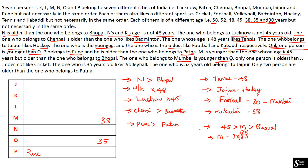Now, M is 38 years and must be older than the Bhopal person. So Bhopal person is younger than 38 — either 35 or 30. But the 30-year-old belongs to Mumbai. So 30 cannot be placed for Bhopal. Therefore Bhopal must be 35 years. Since O is 35 years, Bhopal is placed for O.